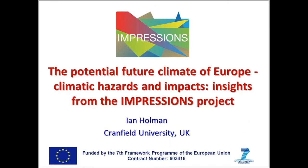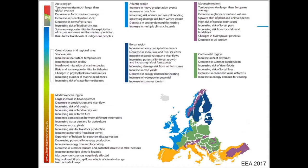Thank you very much. It's a pleasure as a representative from the Impressions project to talk about future issues around the climate of Europe. This infographic from the European Environment Agency's climate change impacts and vulnerability in Europe 2016 report shows that risks facing Europe are spatially variable. Looking at the text, it's largely about increases or decreases of current climate hazards — changes in the risks associated with drought, floods, storms, fires, heat waves, and extreme rainfall events — not many new and emerging risks, but largely a change in the existing risks we currently face.